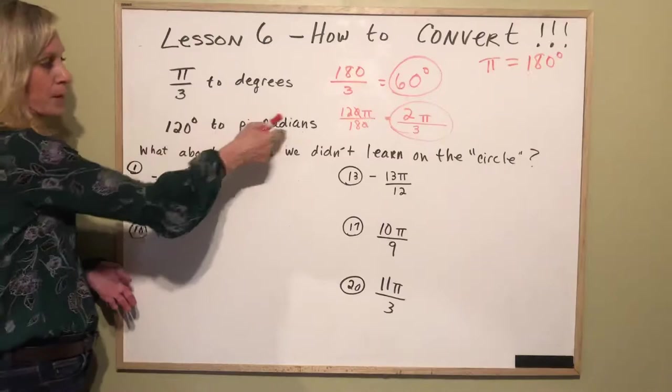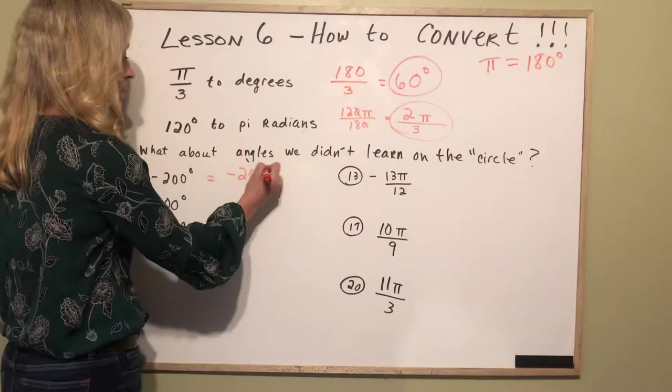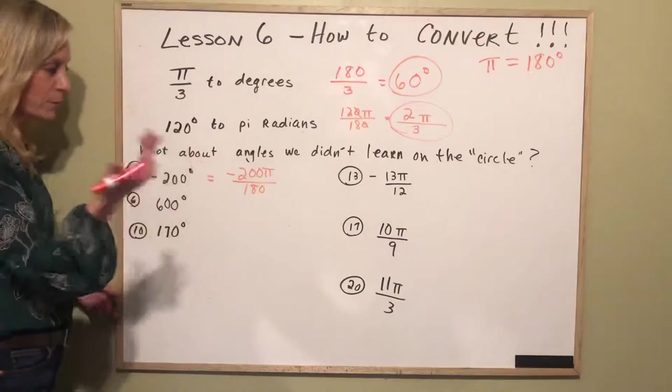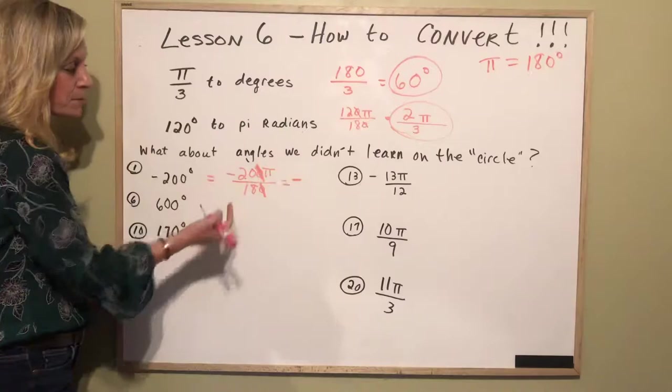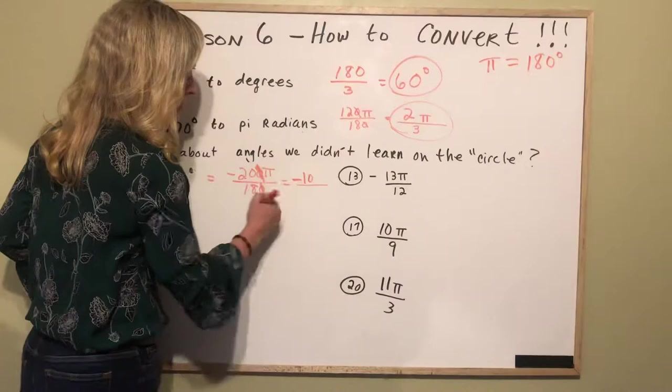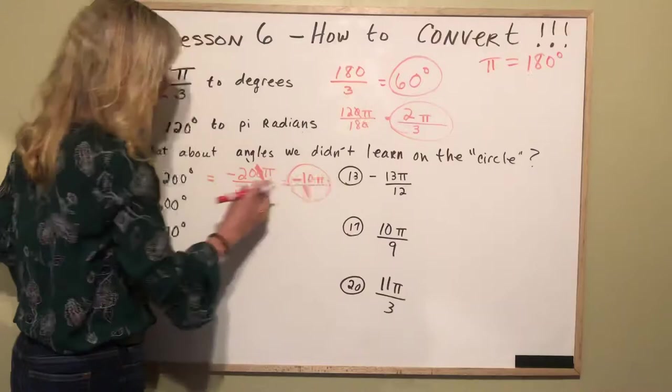So I'm going to go negative 200 times pi over 180 and I'm going to reduce. Again I like to just if I have zero on top zero on the bottom I cancel those out. Leave the negative in the answer. What divides both 20 and 18? 2 does. 2 goes into 20 ten times. 2 goes into 18 nine times and we have a pi in the numerator and that is simplest form. We can't reduce any further.